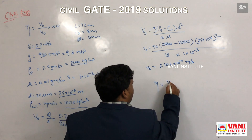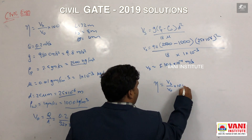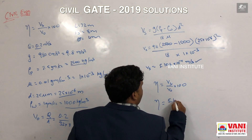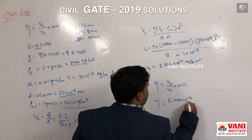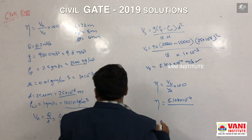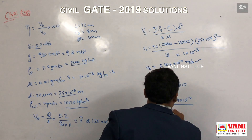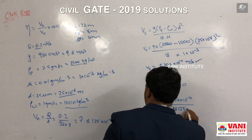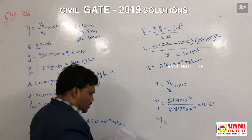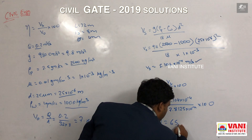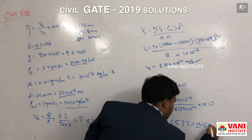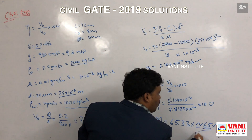Removal efficiency will be equal to Vs divided by V0, multiplied by 100. So removal efficiency equals 5.104 × 10⁻⁴ divided by 7.8125 × 10⁻⁴, multiplied by 100. The removal efficiency will be equal to 65.33 percent, which can be approximated to 65 percent. This is the required answer.